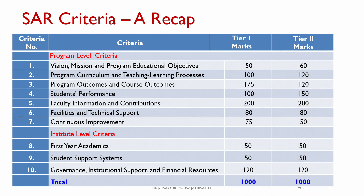A quick recap of the 10 criteria of the SAR — we looked at this table in Module 1. There are 10 criteria, and this is true for both Tier 1 and Tier 2 Institutes. The total marks also remain the same: 1000 marks for both Tier 1 and Tier 2. However, the individual marks allocated to different criteria may differ between Tier 1 and Tier 2 Institutes — they may remain the same or could be different.